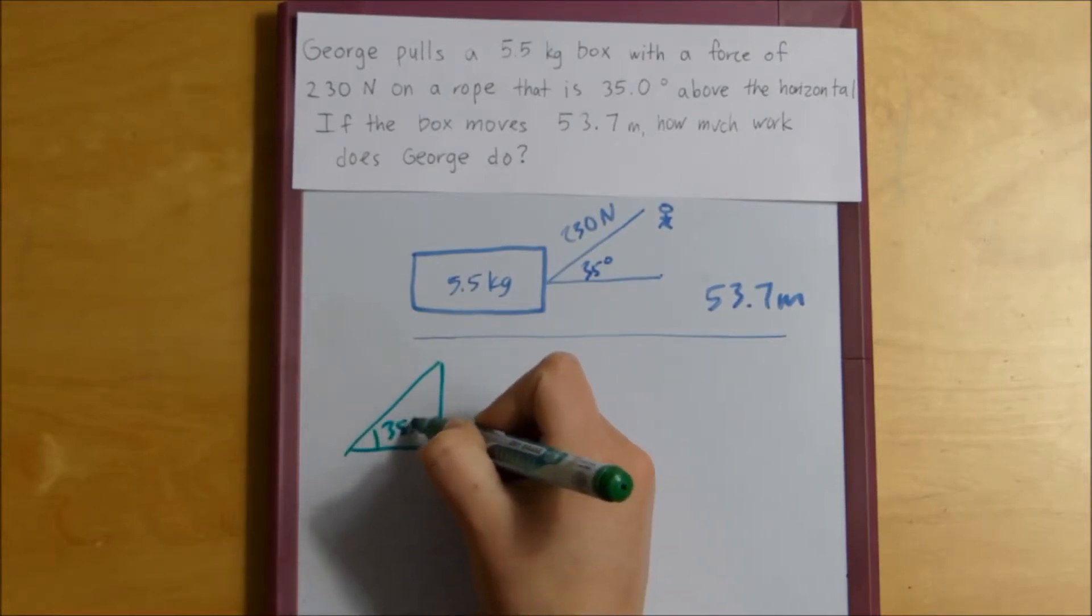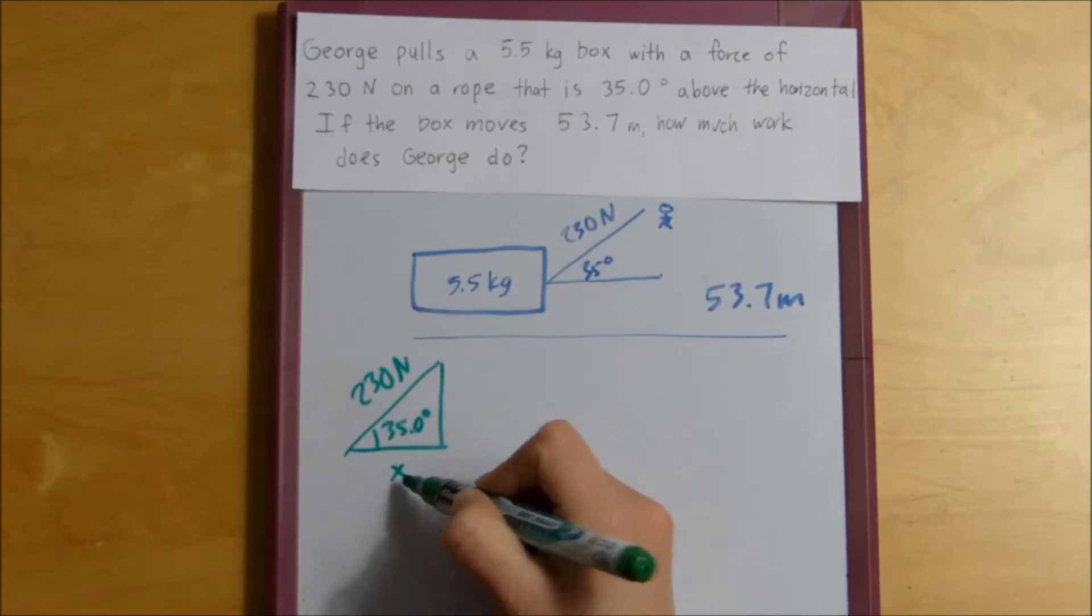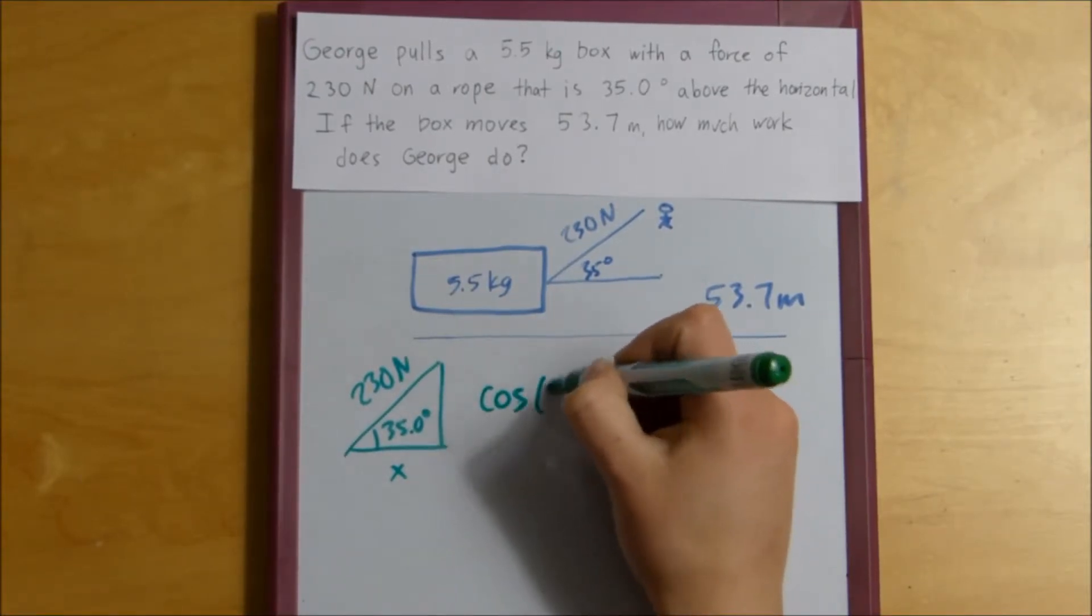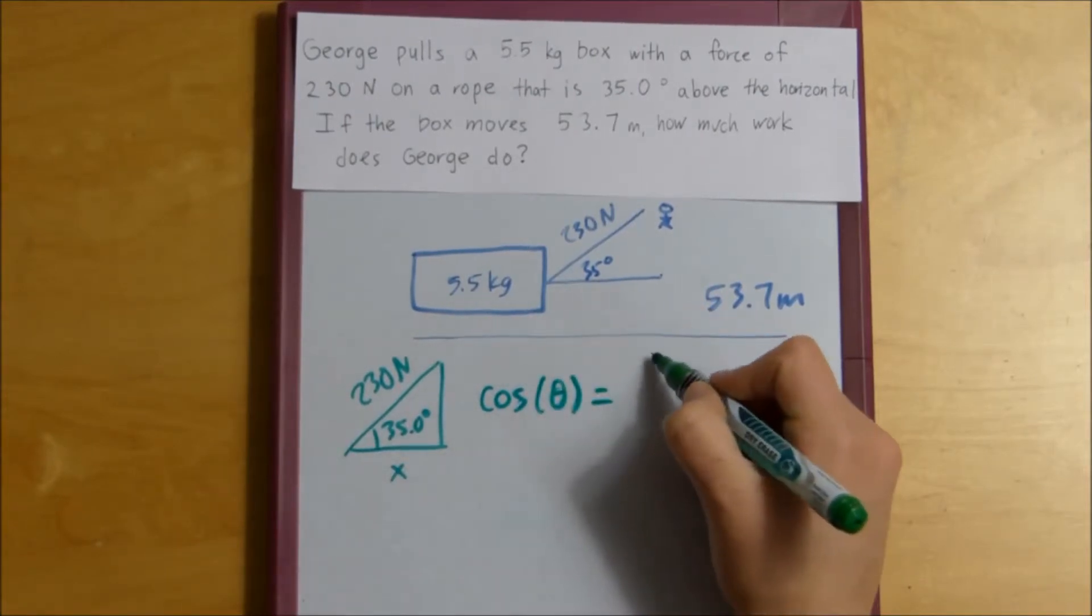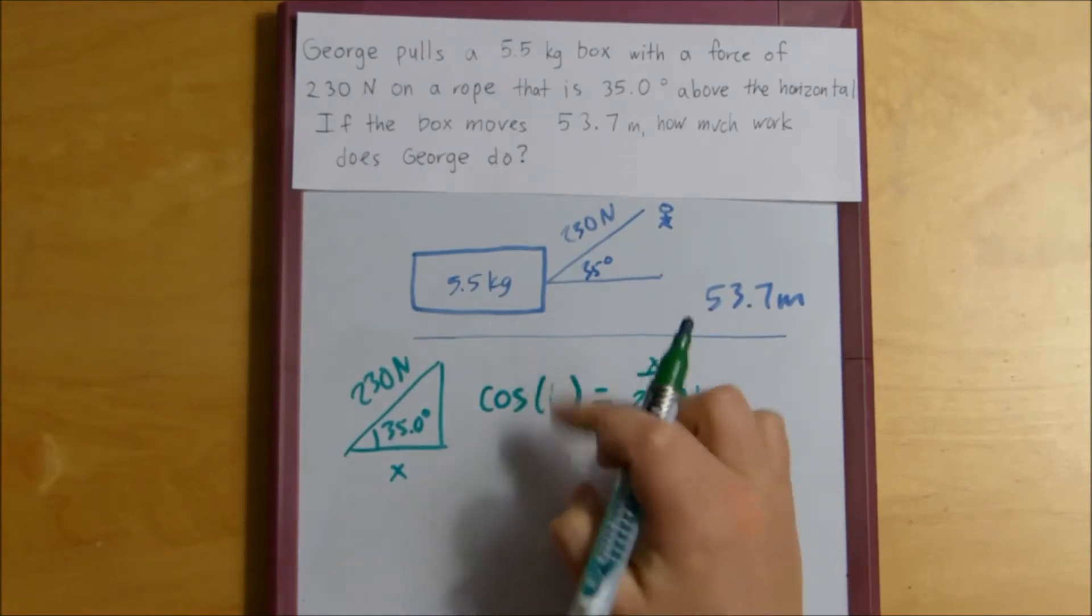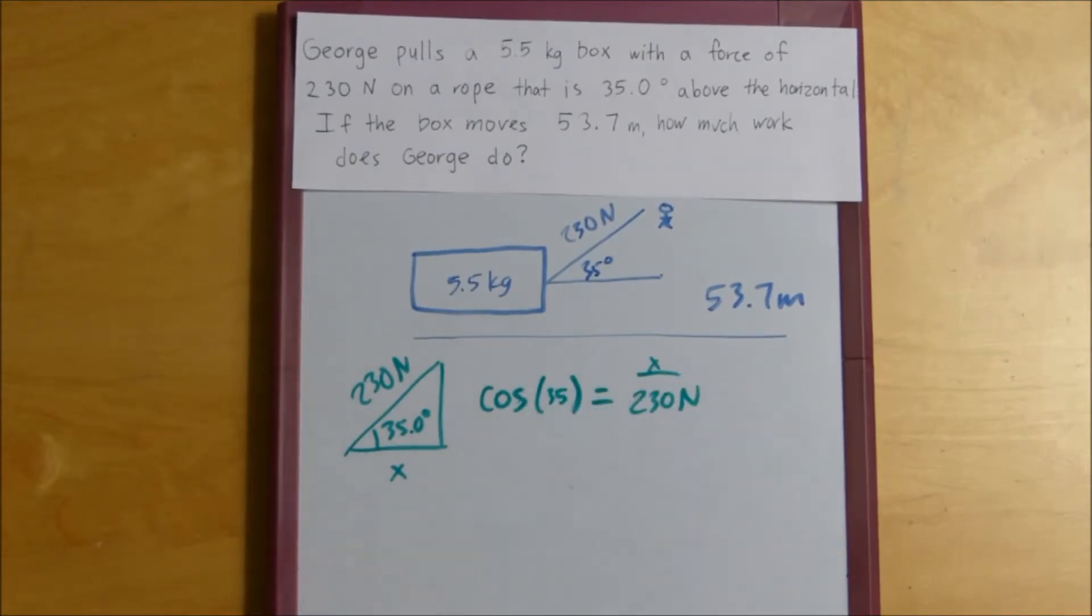35 degrees, 230. And if we're trying to solve for our x here, we know that cosine of theta equals adjacent x over hypotenuse, 230N. And we can replace our theta with 35.